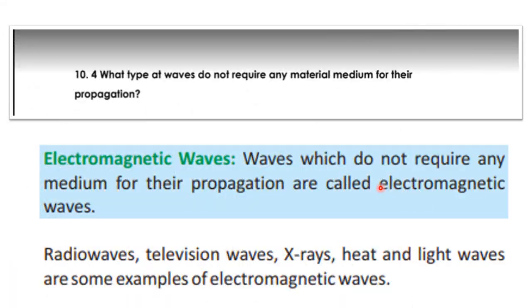Question number four is, what type of waves do not require any material medium for their propagation? Which waves do not require medium for their propagation? And you have learnt that these waves are electromagnetic waves because they do not require medium for their propagation. For example, radio waves, television waves, x-rays, heat and light waves are some examples of electromagnetic waves.